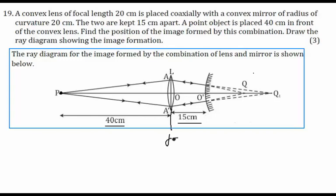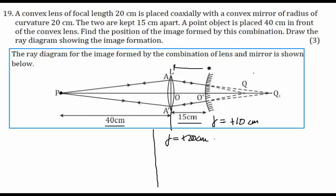The focal length of the lens is plus 20, and the focal length of the mirror is half the radius, so radius of curvature 20 gives plus 10 centimeters. The object is at 2f distance from the convex lens, so the image should form exactly at 2f distance on the other side. Therefore, the first image Q1 will be formed at plus 40 centimeters from the lens.